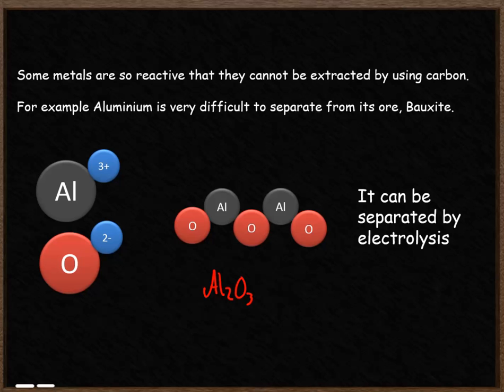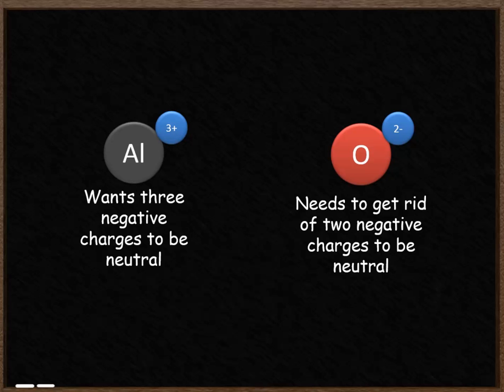The ore is made out of positive aluminium ions. The aluminium ions have got a charge of 3+, and it's also made out of negative O2- ions. As a result of aluminium having a 3+ charge, that means it needs to have three extra negative charges to be neutral. So we need to add three electrons to the aluminium for the aluminium to become neutral.